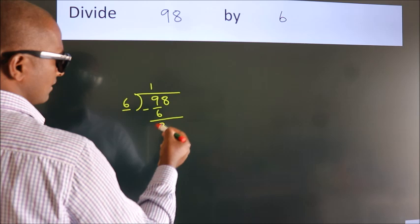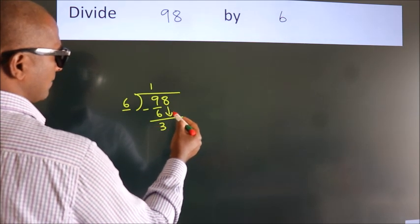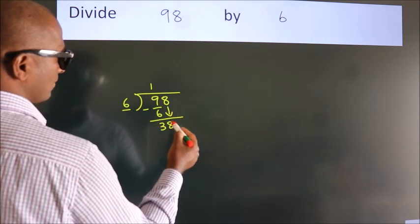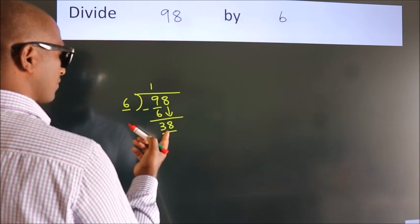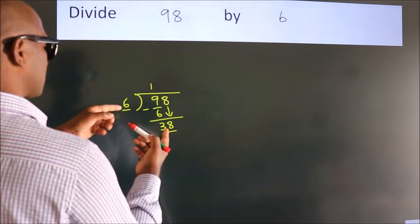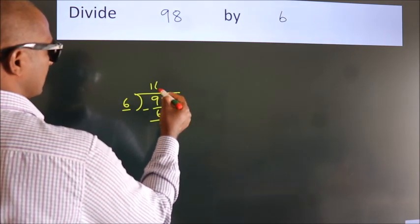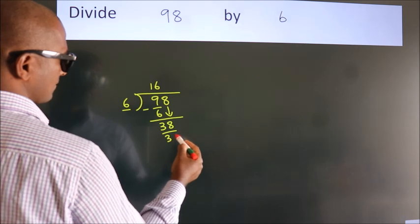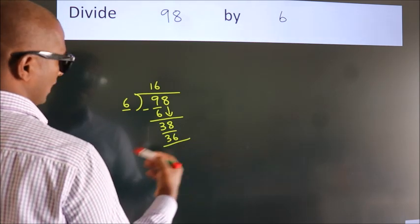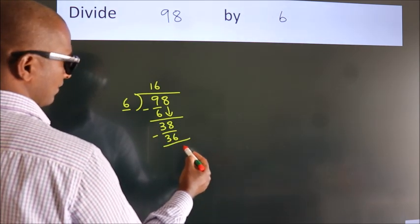After this, bring down the next number. So, 8 down, giving us 38. A number close to 38 in the 6 table is 6 times 6, which is 36. Now we subtract and get 2.